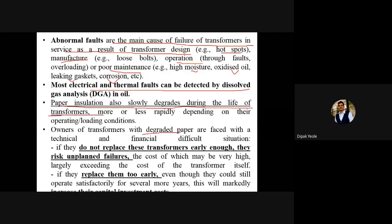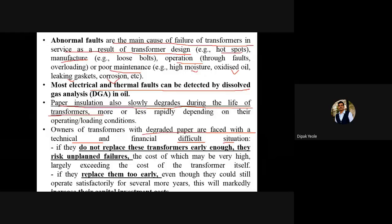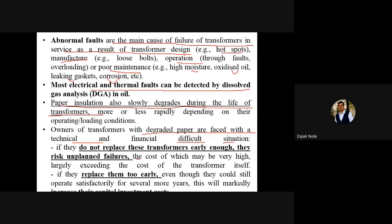We are interested in different tests. The DGA test you have studied today. If you are conducting this test routinely or regularly, you are taking care of the transformer. But if you do not replace the transformer in time, it tends to unplanned failure, and the cost of which may be very large — largely exceeding the cost of the transformer itself. You have to compare the carbon dioxide and carbon monoxide levels with the standard one to make a replacement decision.